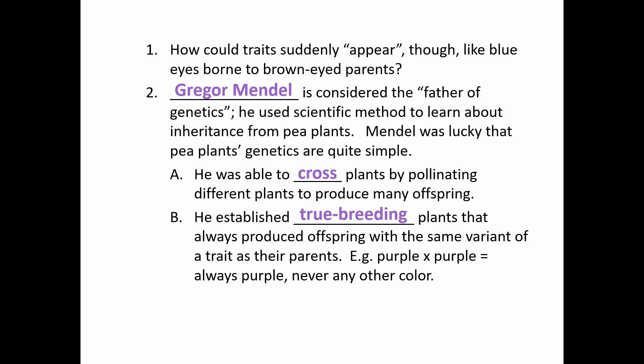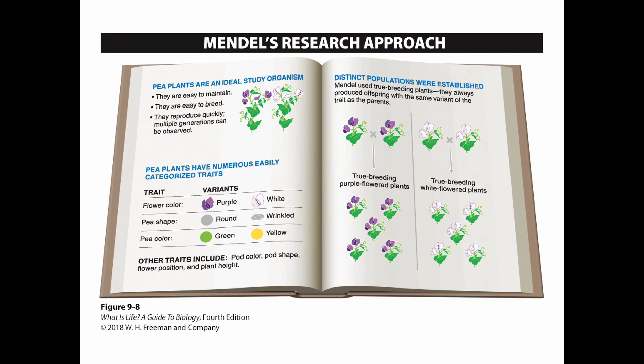For example, one plant would have purple flowers and the other would have white. And what he noticed is that when he did that, he produced all purple offspring. But then when he crossed those purple offspring, the white trait would come back. And it was that phenomenon that really caught his attention and got him digging deep into the scientific method to figure out what was going on with these traits.